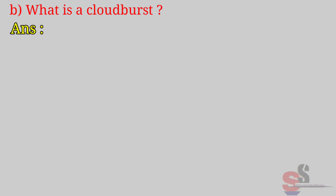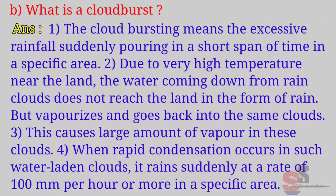B. What is a cloudburst? Answer: A cloudburst means excessive rain falling suddenly in a short span of time in a specific area. Due to very high temperature near the land, water coming down from rain clouds does not reach the land as rain but vaporizes and goes back into the clouds. This causes a large amount of vapor in these clouds. When rapid condensation occurs, it rains suddenly at a rate of 100 mm per hour or more in a specific area.